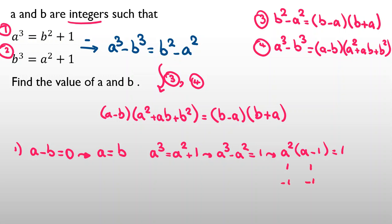If A squared equals one, then A is one or negative one, making A minus one equal to zero, which gives a product of zero — contradiction. And A squared cannot be negative one. So we've reached a contradiction in case one, meaning A equals B is impossible.